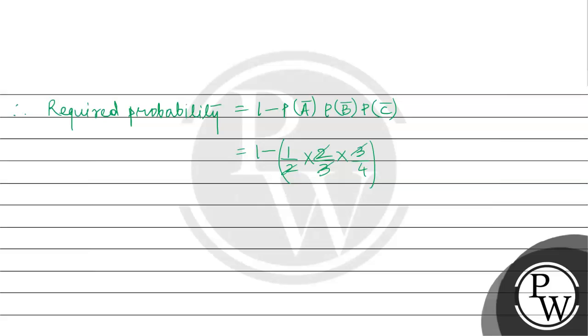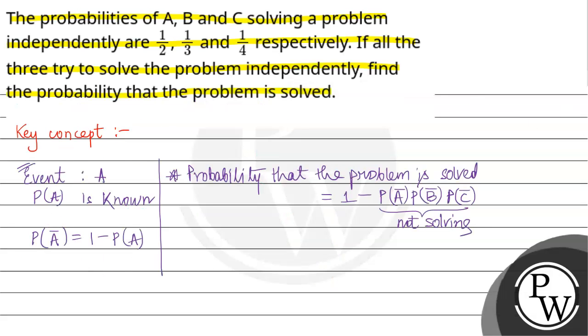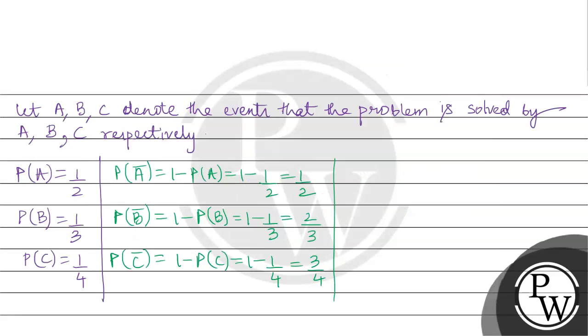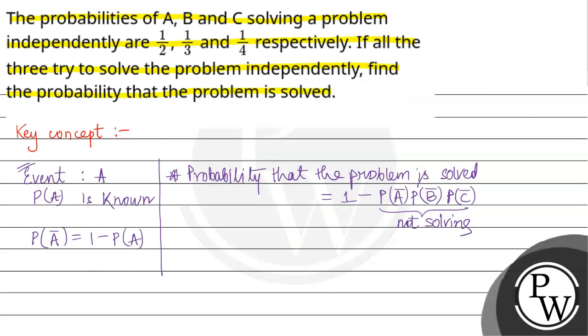After cancellation, 1 minus 1 by 4 equals 3 by 4. So the required probability is 3 by 4. This is the final answer. The probability that the problem is solved is 3 by 4. Hope you understand it well. All the best.